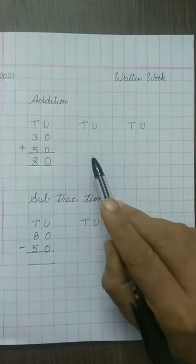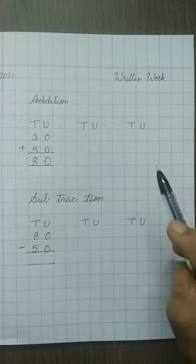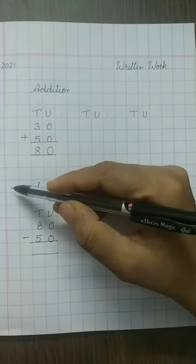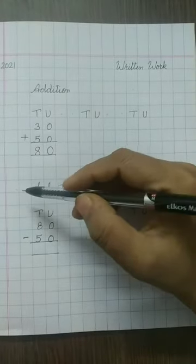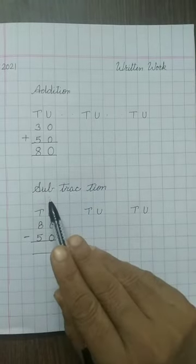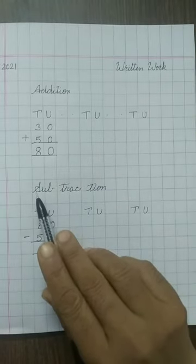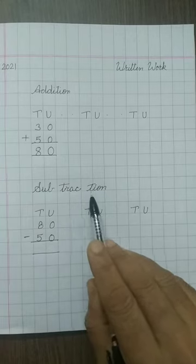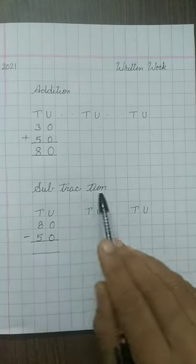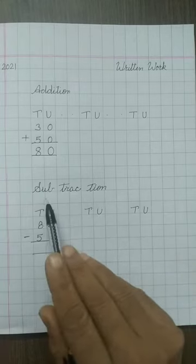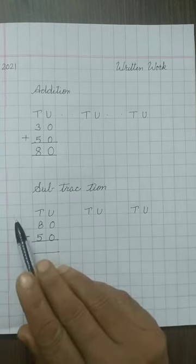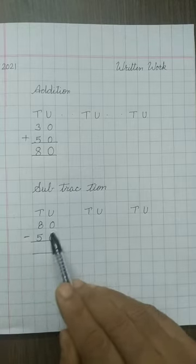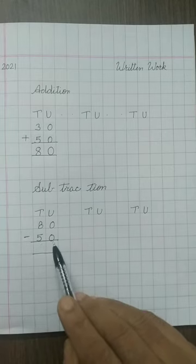Kids, you have to do 2 more sums. After that, leave two boxes and from the margin line again leave two boxes and write the heading: Subtraction. S-U-B-T-R-A-C-T-I-O-N, Subtraction. S should be capital. Again leave one box from the margin line. Leave two boxes and write T, U. The sum is 80 minus 50.